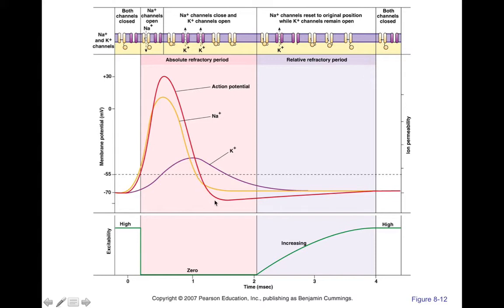That continues until we get close to negative 80 or negative 90 millivolts. We call this hyperpolarization — where you have a voltage that's even more negative than resting voltage, hence the 'hyper,' sort of beyond it. Hyperpolarization is also where the voltage-gated potassium channels close. Once those close and you stop allowing potassium to flow, our voltage can slowly reset back towards resting voltage due to the sodium-potassium pump and leakage channels.